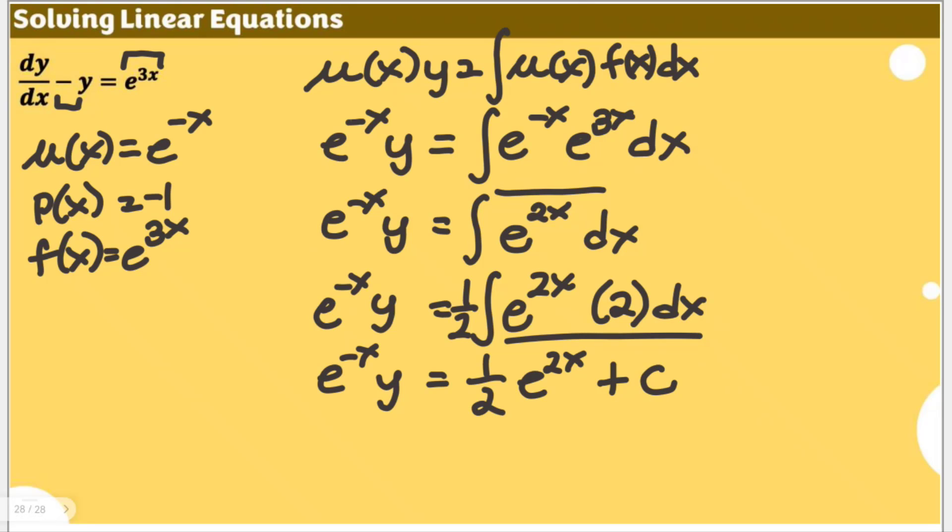Now we would like to have a form which is y is equal to something. As we are solving for this linear equation. So we are going to multiply both sides by e to the power of x.